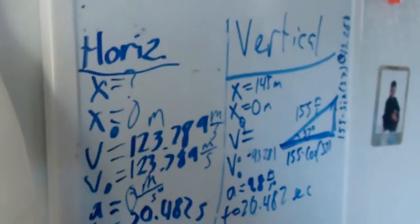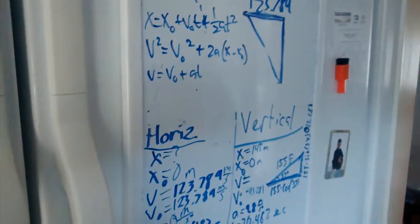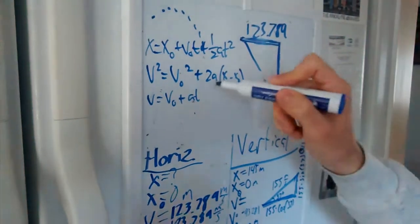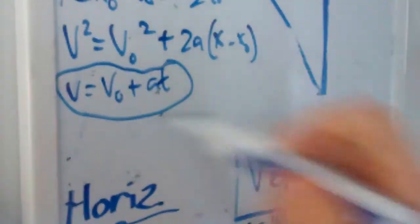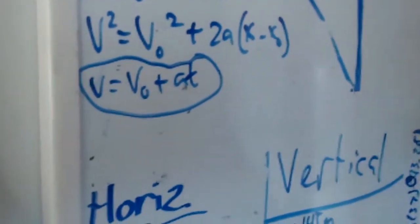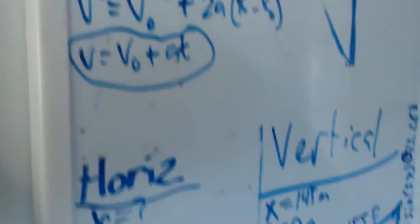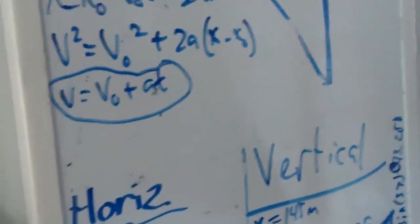We've got X equals X naught plus V naught T plus one half AT squared. We have V squared equals V naught squared plus 2A(X minus X naught). And we have V equals V naught plus AT. Okay, so we're looking for V. Well, it already popped up to me. Let's see if you can pause the video and guess which equation it is. But to me, I see it right away. It's very obvious. It will be this one right here. You know why?